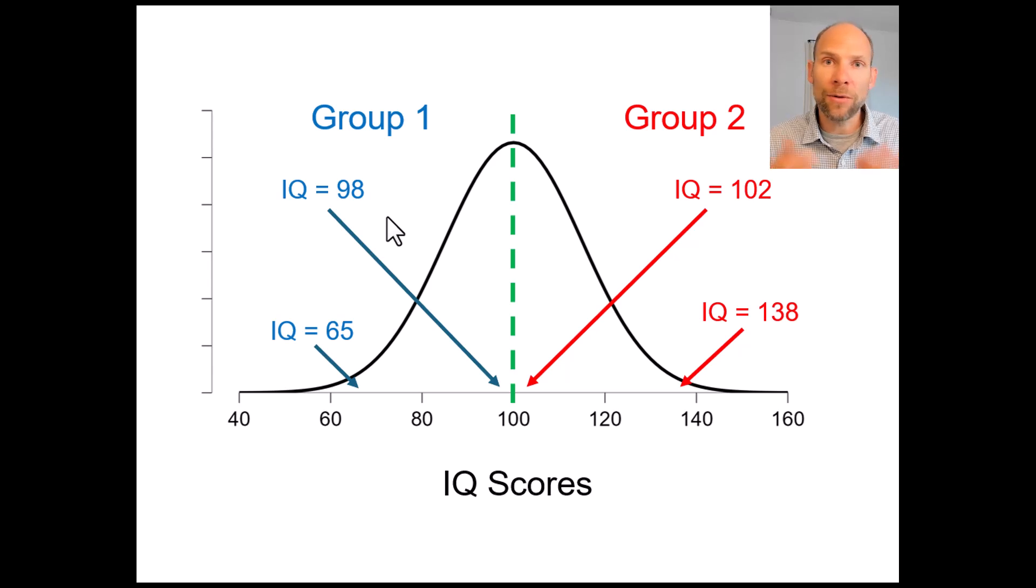and then you would avoid this problem of dichotomization and you could learn about the relationship between IQ scores and job success